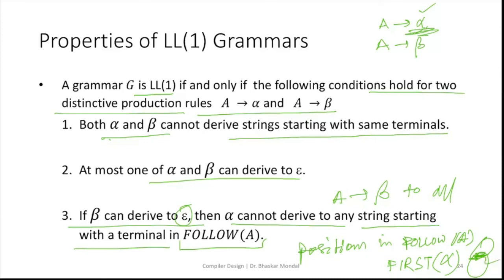Next is predictive parsing. Predictive parsing is nothing but LL1 parsing. We call it predictive parsing because our computer can predict what production rule to apply at what position using the look-ahead symbol.